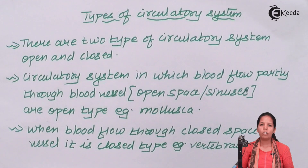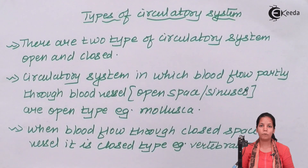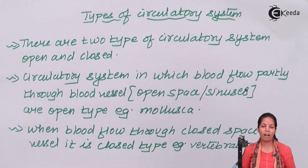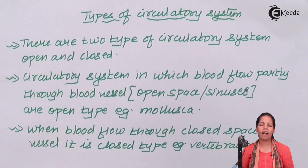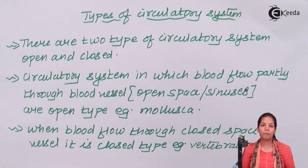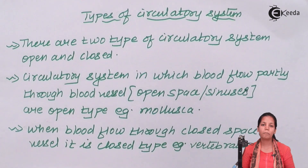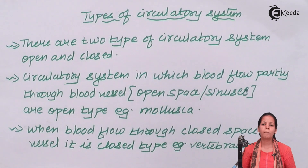If you closely observe the circulatory system in any human being, the circulatory system will have a heart. It is the heart that purifies the blood, and the blood will carry oxygen to different parts of the body. That's the prime role of the circulatory system in human beings.